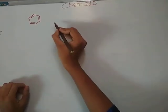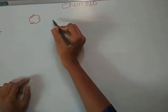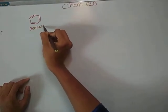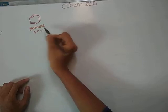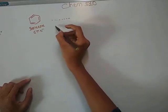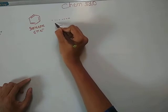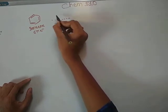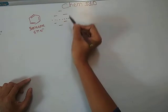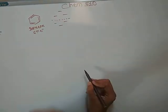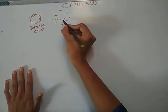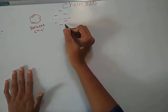Benzene has six pi electrons. There are three bonding molecular orbitals and three anti-bonding molecular orbitals. We can calculate these using the Frost-Musulin method.